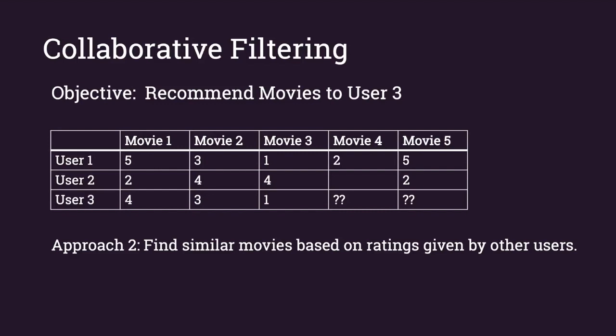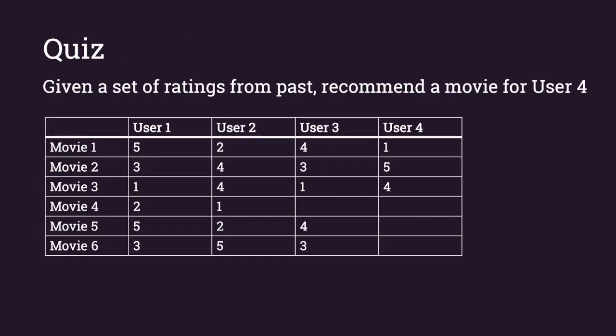The reason item-to-item works better is that there are generally many more users in a system than the number of products or categories. Also, user preferences are dynamic — something you might like in your early teens you might not like growing older. Whereas in an item-to-item method the item stays the same irrespective of time; a horror movie is still a horror movie after 10 years.